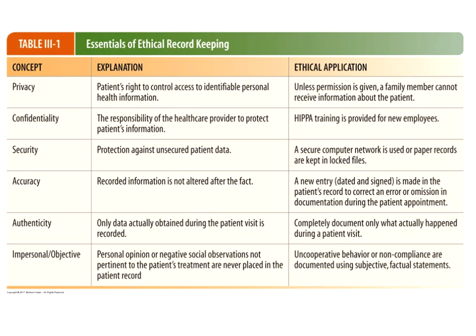We'll get into how to make corrections for both handwritten and electronic records. Authenticity means only data actually obtained during the patient's visit is reported — you can't backdate anything or make up numbers. Records also need to be impersonal and objective. Personal opinions or negative social observations that aren't pertinent to the patient's treatment don't belong in the patient record. Personal notes can go in a separate notes section, but they're not part of the official record.